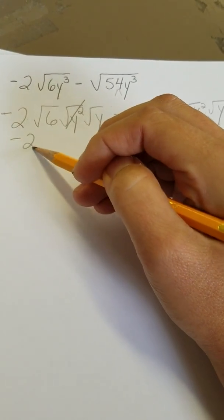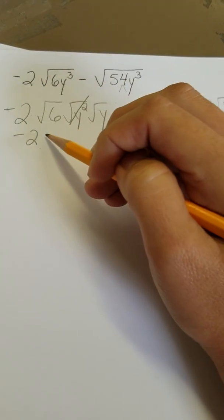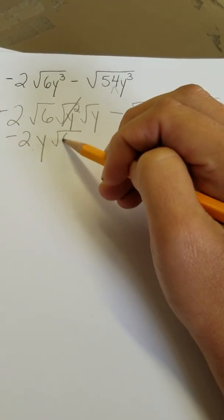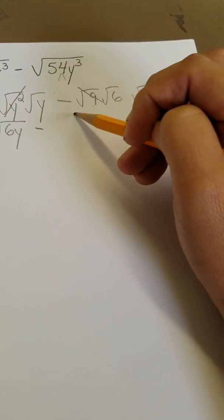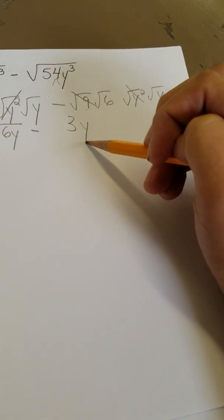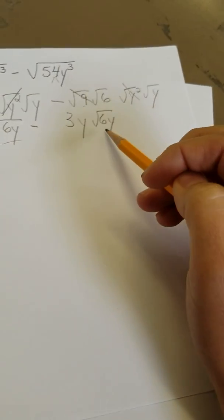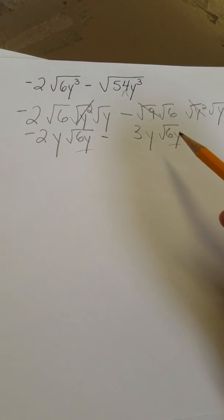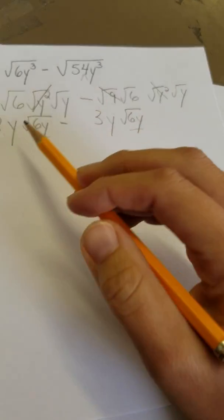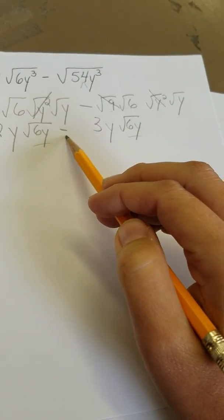Now let's pull out the perfect things. Negative 2 is hanging out. Y squared is Y. 6Y is inside. Minus. 3 is perfect. Y squared is perfect. I'm left with 6Y. Oh, yippee. They are the same inside again. It doesn't always happen, but luckily for us it does.